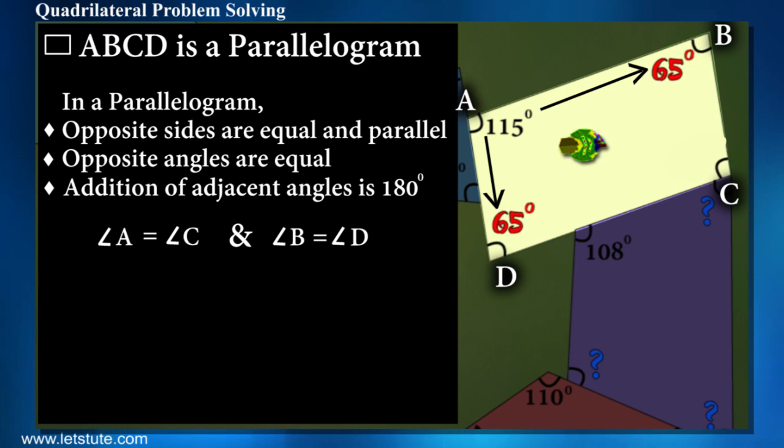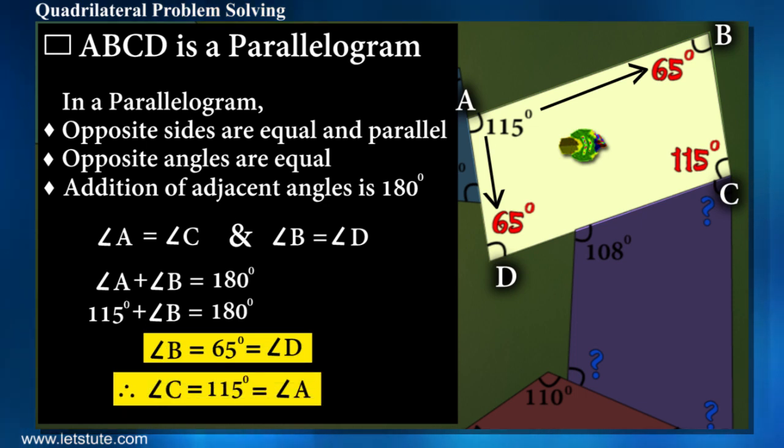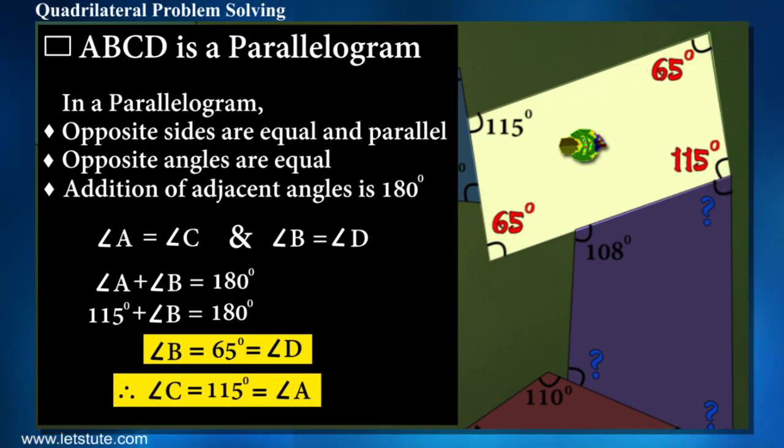And to complete 360 degrees, the remaining one will be 115. And you can see that opposite angles have come out to be equal.